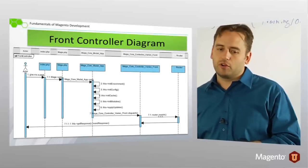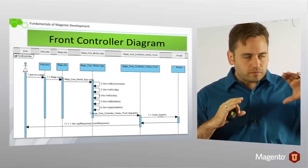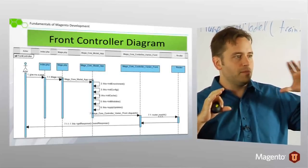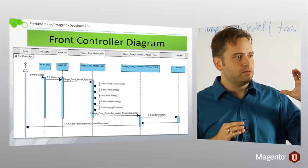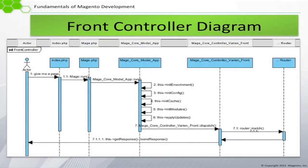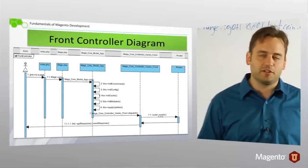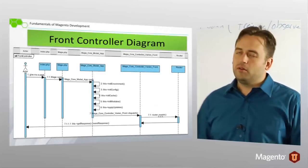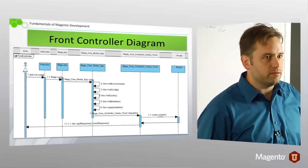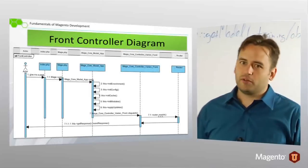So, front controller is the area of the application that handles all the logic and objects involved with requests and response. Another diagram of this is the actor, in this case, the visitor to the site, give me a page, index.php, kicks off Mage Run, kicks off App Run, fires up our environment, our config, looks at our cache, initializes modules, applies updates, and then we instantiate Mage core controller variant front. That's the front controller. And then, we go and find the appropriate router and route the request to the correct controller.